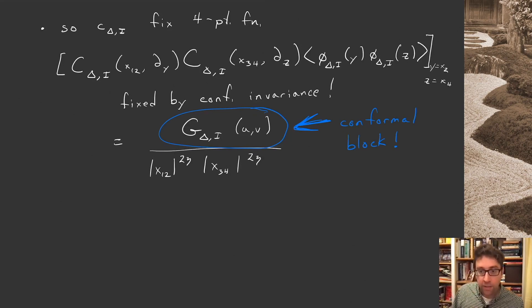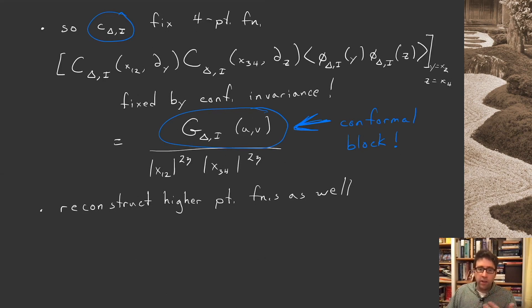That's fixed by conformal invariance. What's not fixed are these little c's, the three-point function coefficients or the operator product expansion coefficients. But if you happen to know them, then you can reconstruct the full four-point function. In fact, you can reconstruct higher point functions as well. Instead of writing this all out algebraically, maybe introducing some notion of like a Feynman diagram would be a little bit more useful.